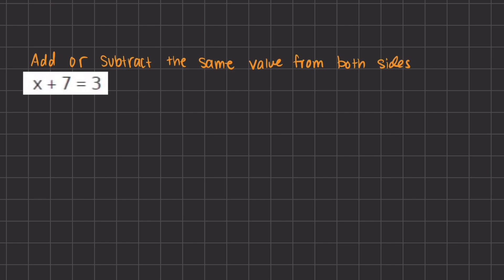Our first manipulation method is adding or subtracting the same value to both sides of the expression. When you have an equal sign, you can move certain constants or variables from one side to the other using addition or subtraction. This will allow you to find the simplified version of a certain variable.